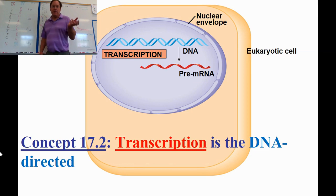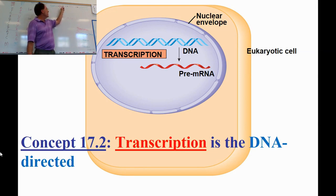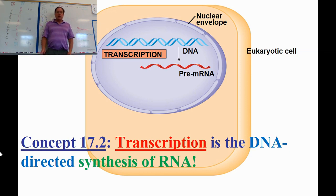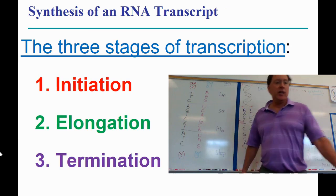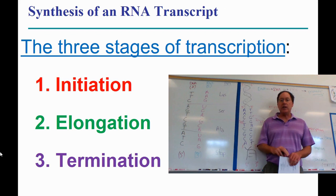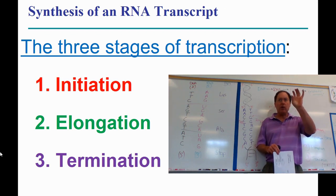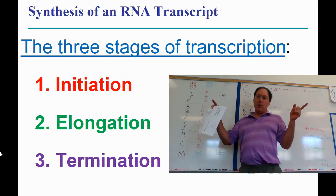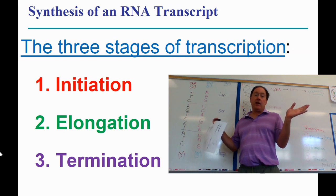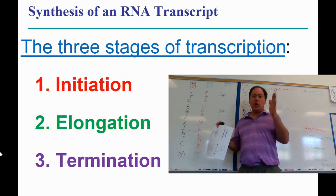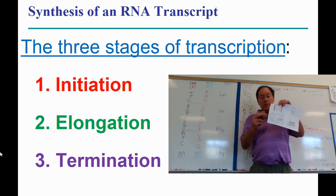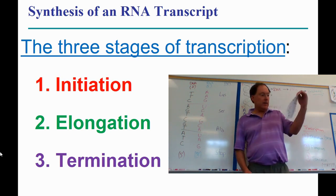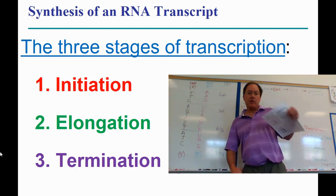We're now on 17.2 — transcription. There are a few steps in this chapter: transcription is 17.2, translation is 17.3, and then we'll get to all the processing. There are three stages in transcription: initiation, elongation, and termination. The same three stages apply to translation as well. Transcription is the process of making RNA from a DNA template. Several key factors are involved, including DNA, transcription factors, RNA polymerase, and ATP.